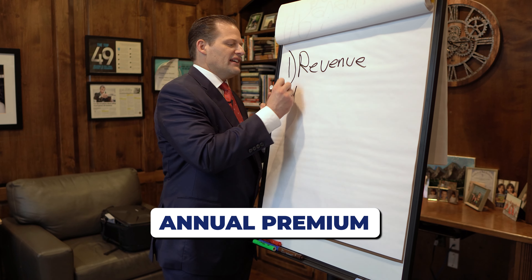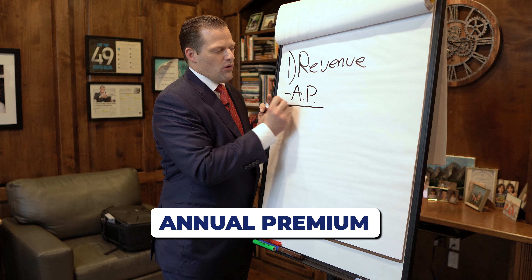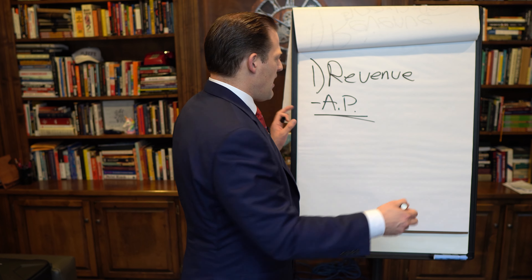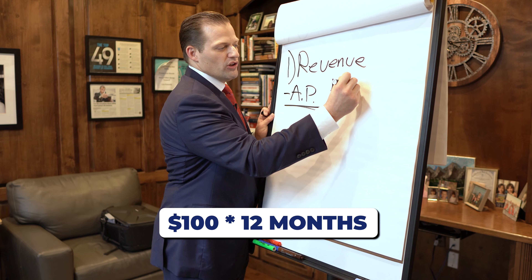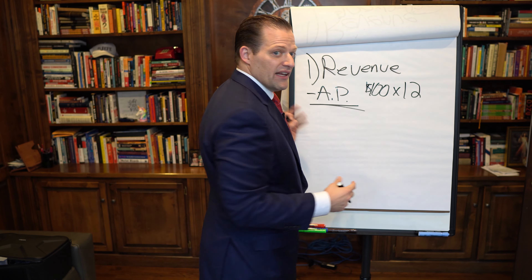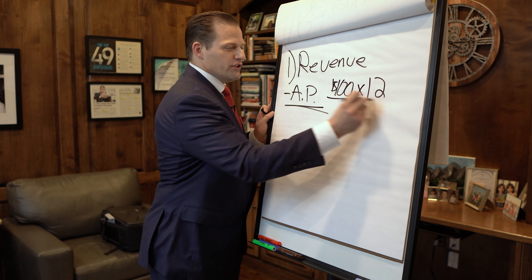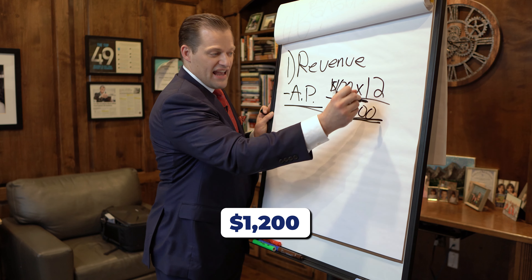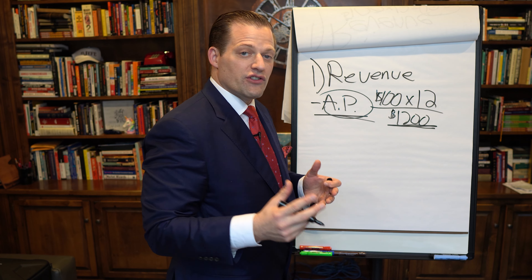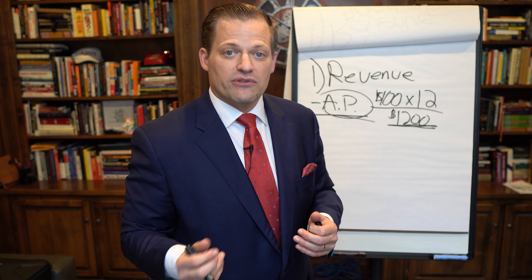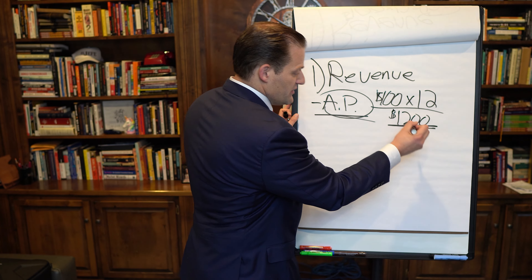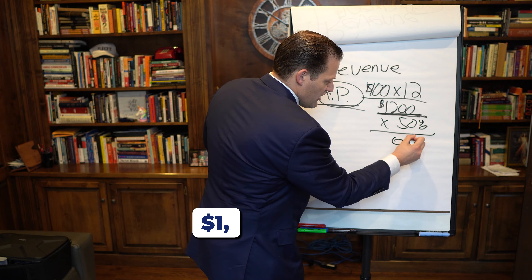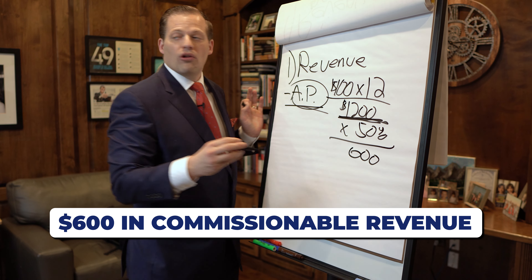This is what's known as the annual premium, or AP for short. To determine AP, think of a monthly number that you would pay for a policy — let's say $100 a month. You multiply that by 12 months because that's the annual premium, giving you a total of $1,200. That $1,200 in annual premium is what we base the commission off. If you're at a 50% commission contract, you multiply $1,200 times 50%, which gets you $600 in commissionable revenue.